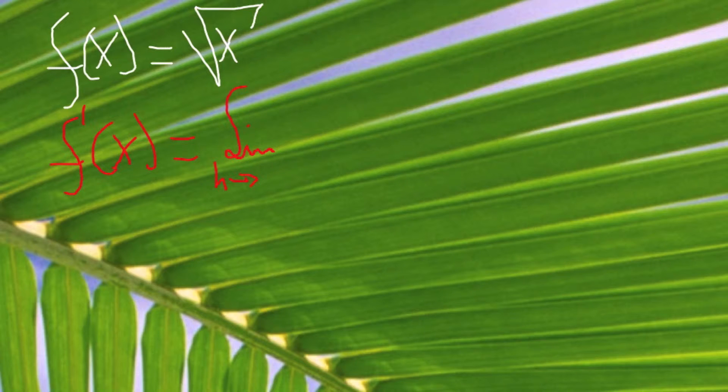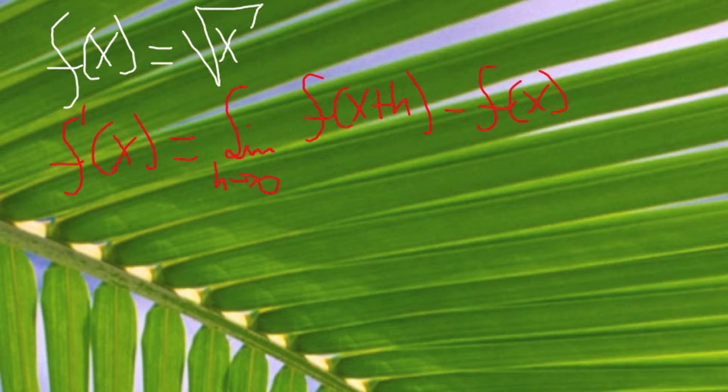Normally, f prime of x, which is the derivative of a function in general, is the limit as h goes to 0 of the quantity f of x plus h minus f of x, everything divided by h.